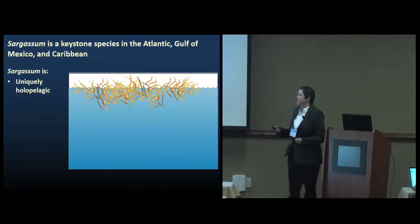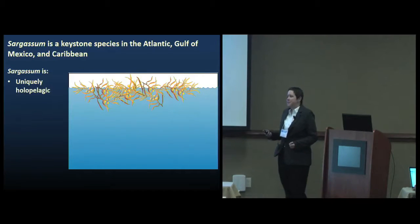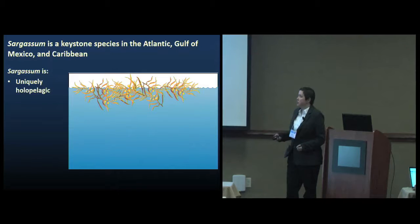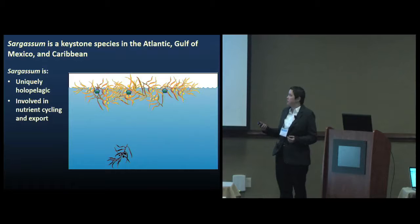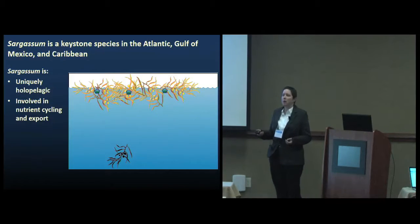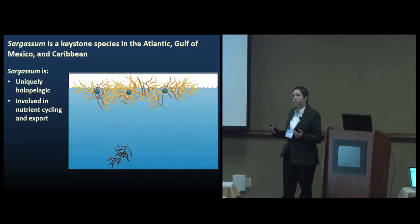Sargassum is a type of macroalgae or seaweed, and the species that I study are unique in the world's oceans because they're the only ones that spend their whole life floating on the ocean's surface. The mats that sargassum forms as it floats around are involved in nutrient cycling, and in areas of the ocean where sargassum is found, the nutrient qualities are pretty low.